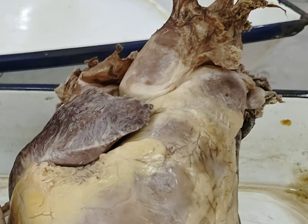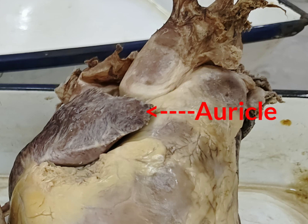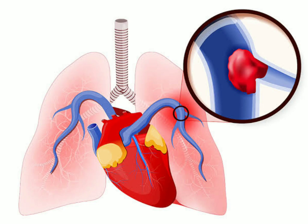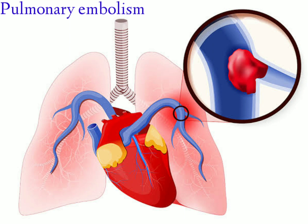The upper border of the right atrium has ear-shaped projections over the ascending part of the aorta and some part of the pulmonary trunk. This ear-shaped projection is called the auricle. It is a non-functional part, but clinically it is a common site for the formation of blood clots. These clots enter the right ventricle and then the pulmonary arteries, causing a condition called pulmonary embolism.